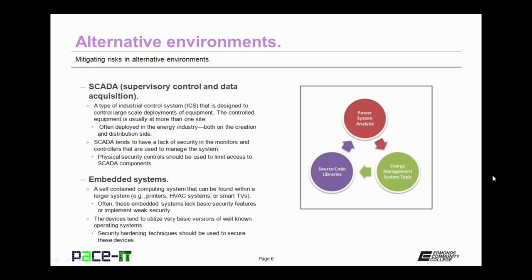Then there are embedded systems. Embedded systems are a self-contained computing system that can be found within a larger system, such as printers, HVAC systems, smart televisions, or even automatic teller machines, or ATMs. Often these embedded systems lack basic security features or implement weak security. The devices also tend to utilize a very basic version of well-known operating systems. Therefore, you can perform security hardening techniques on those operating systems to help secure these devices.